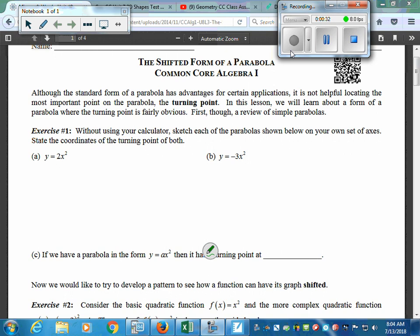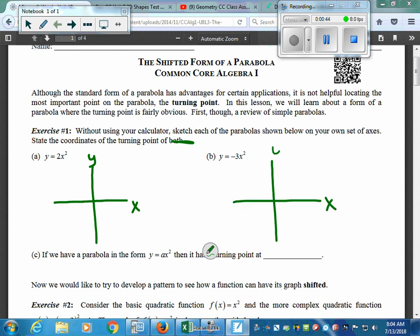This one says without using the calculator, and we're just going to review the idea. So I'm going to just do a little sketch, a graph with maybe a key point or two on it. For the first one here, it says 2x squared. Well, like we talked about before, if the a value is greater than zero, it's going to open upwards. And if that a value, like with part b, is less than zero, it's going to open downwards.